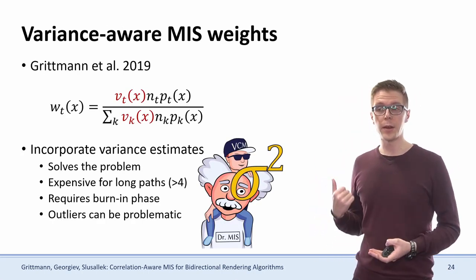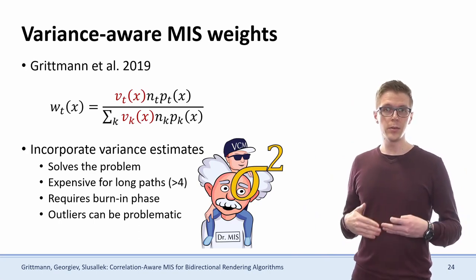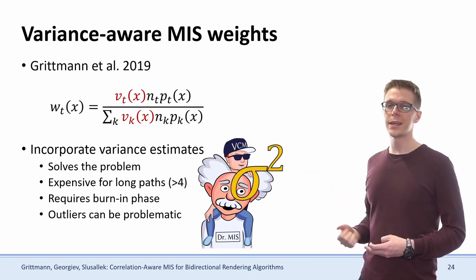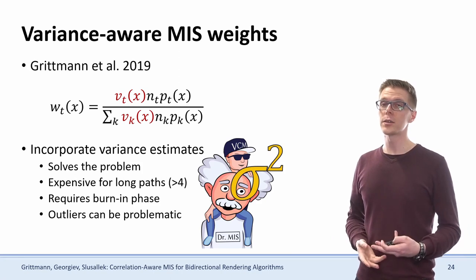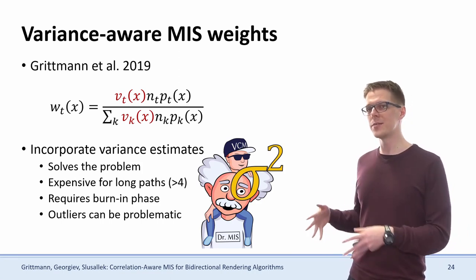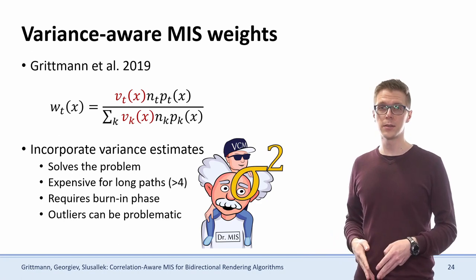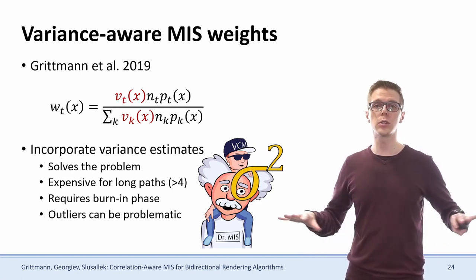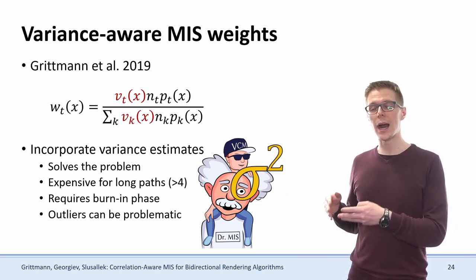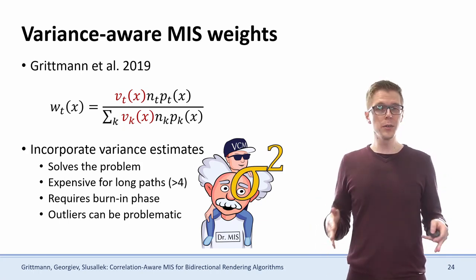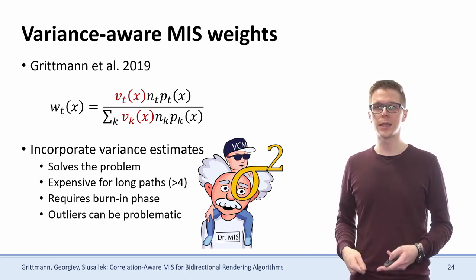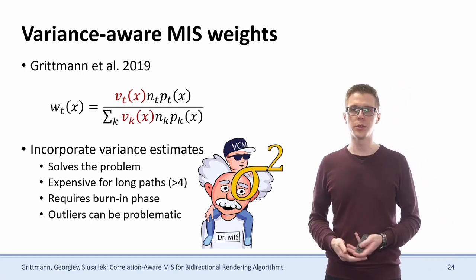There are also the variance-aware weights, which compute variance estimates of every single sampling technique and inject them into the balance heuristic. As we've seen in the simple example, that actually works very well in theory. But in practice, computing that many variance estimates is very expensive, especially in VCM where you have a huge number of different merging techniques. Additionally, we require a burn-in phase to compute those variance estimates in the first place, and if we have a lot of outliers, this burn-in phase can be very, very long. So it's also not an efficient solution to the problem.